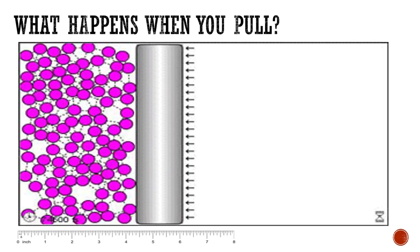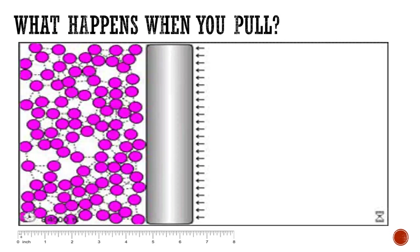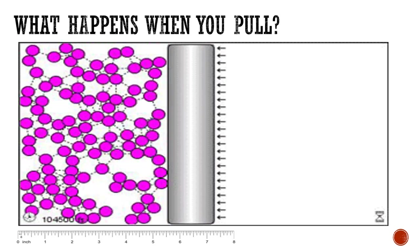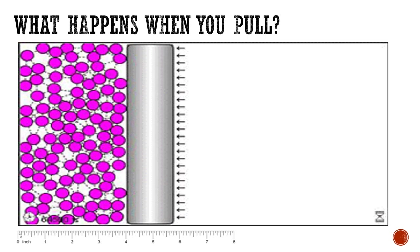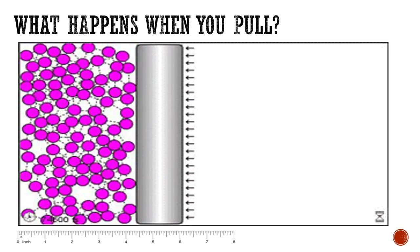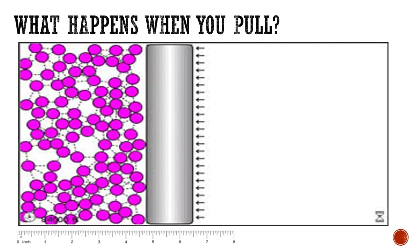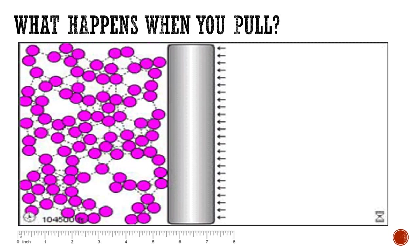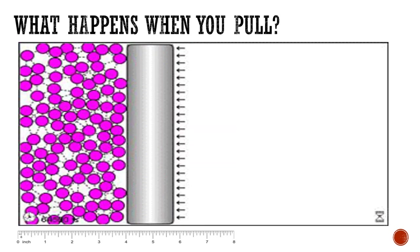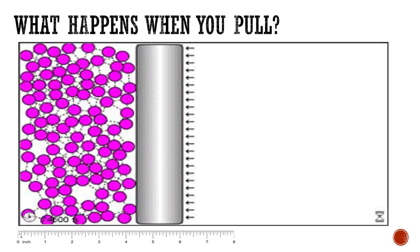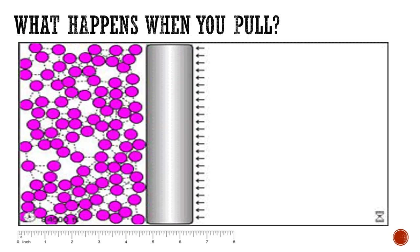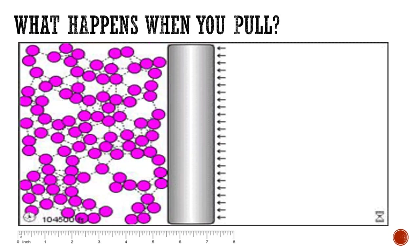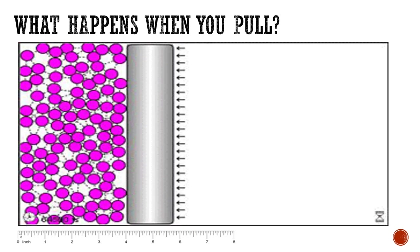What happens when you pull the plunger backwards? When you were pushing it, you were increasing the pressure on the gas molecules. Now pulling it means you are decreasing the pressure. What happens to the volume of the gas it occupies? Take note of your observations.